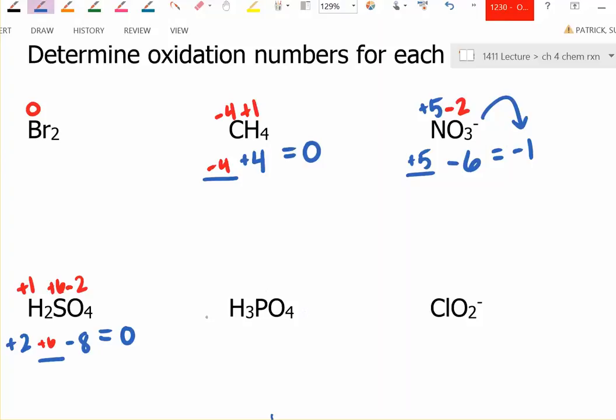Next one. What elements do I have rules for? I have a rule for hydrogen. It's plus one. A rule for oxygen. It's minus two. I know that these, all of them will add up to zero. Again, this is a neutral compound, so it adds up to zero.